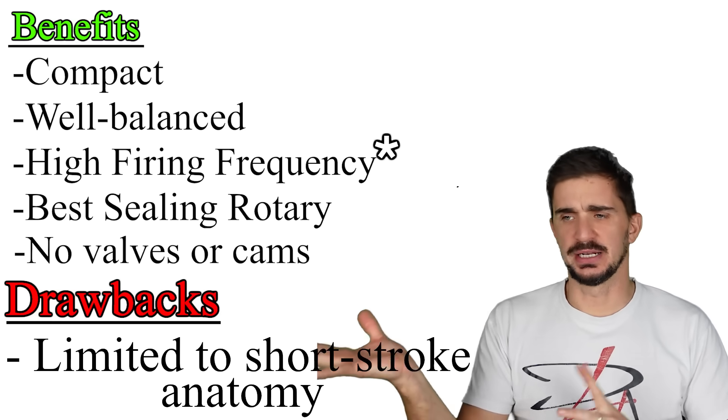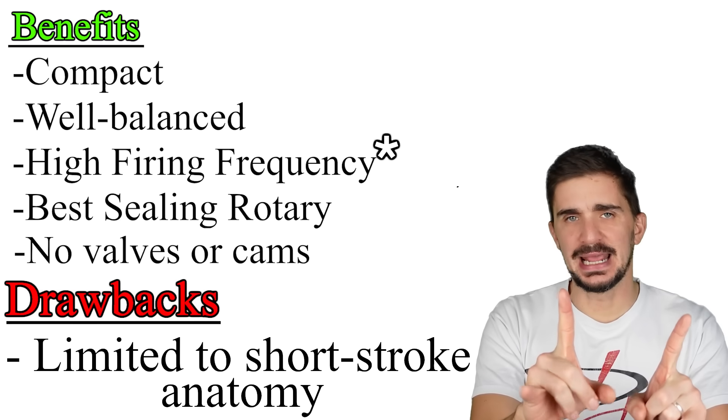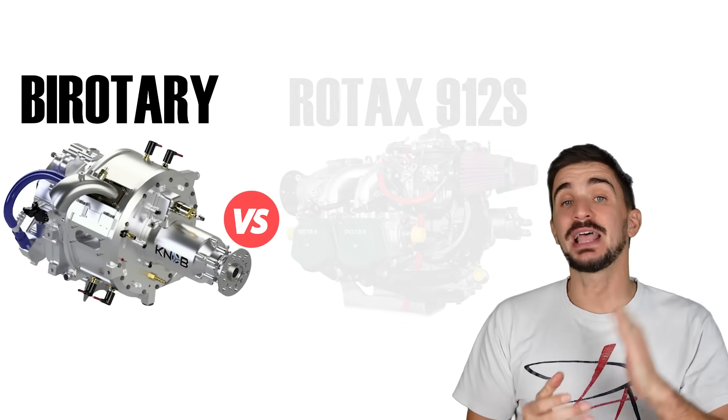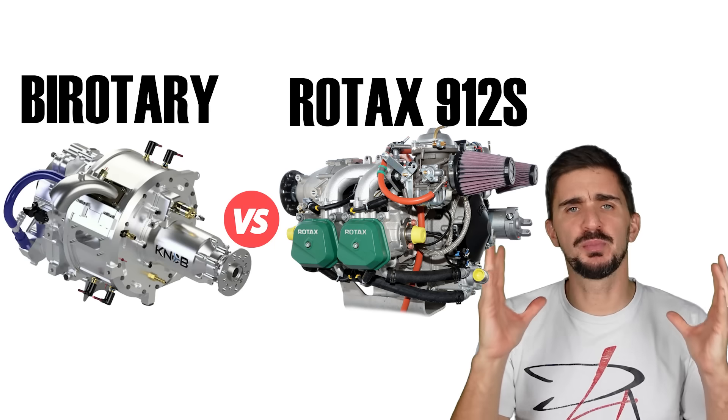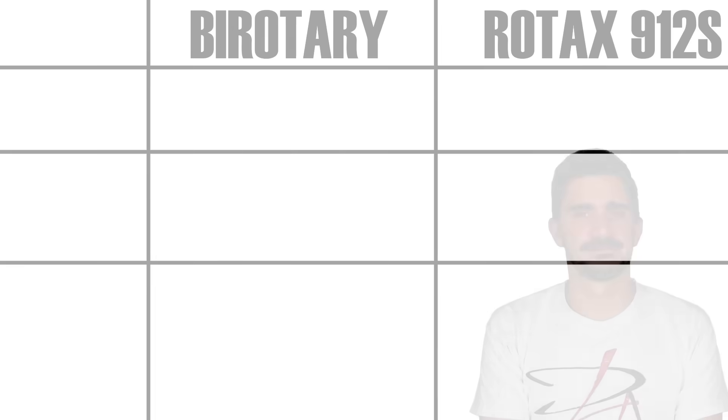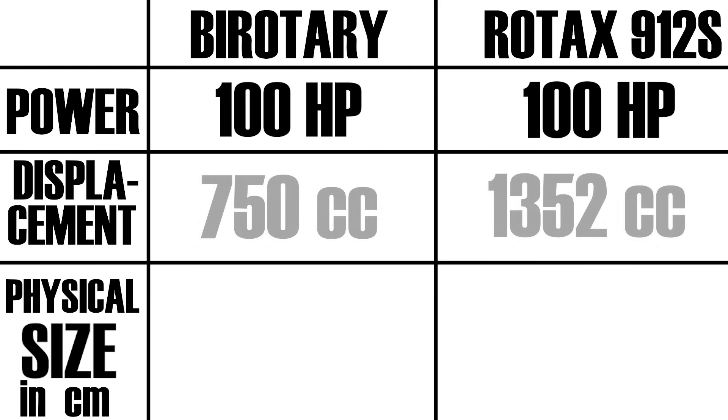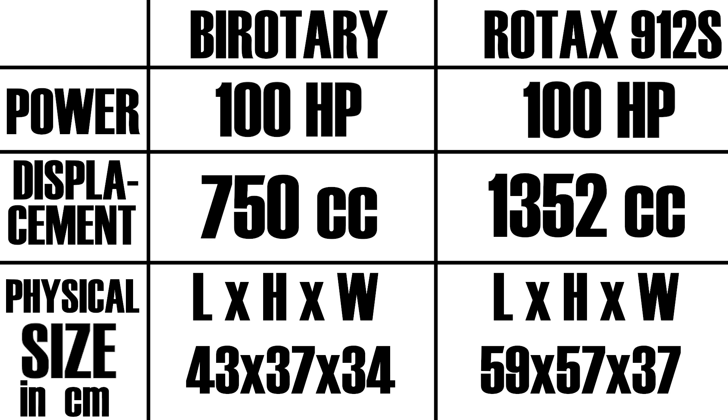Or is it a rotary father and a piston mother? Who cares? What's more important now is to see whether the theory translates into practice. Let's now compare this engine to a direct competitor. The Rotax 912S. Probably one of the most popular small aircraft engines in the past two decades. So these two engines, they have the exact same power output, but they have different displacements and different dimensions. As you can see, the bi-rotary manages to put out the same power, with just over half the displacement and a noticeably smaller size. So no matter how you look at it, the bi-rotary is more power dense, which is most certainly an impressive feat.